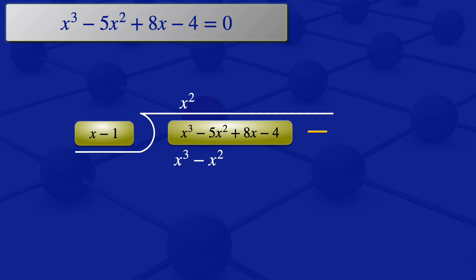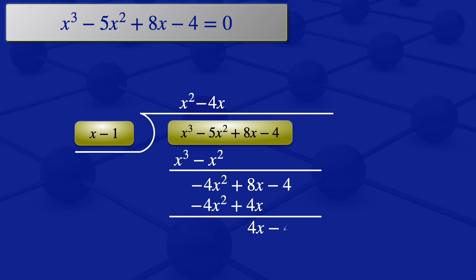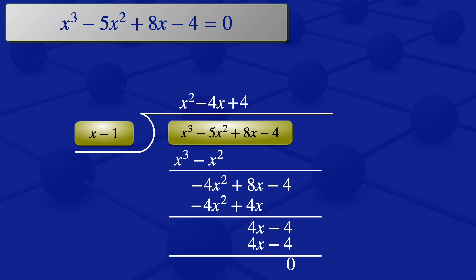Subtracting that from the expression above gives minus 4x squared plus 8x minus 4. The leading term is minus 4x squared; dividing by x gives minus 4x. Multiplying minus 4x by x minus 1 gives minus 4x squared plus 4x. Subtracting from above gives 4x minus 4. Dividing the leading term 4x by x gives 4, so we write plus 4. Multiplying 4 by x minus 1 gives 4x minus 4. Subtracting from above gives 0, so we are done with the division.